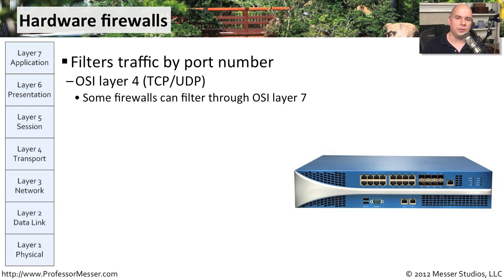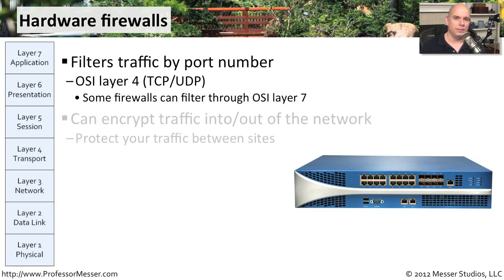Most of these are filtering by a TCP or UDP port number, so they work at OSI layer 4. There are some firewalls that work at OSI layer 7 — they recognize applications, and they can allow or not allow applications to flow through the firewall.